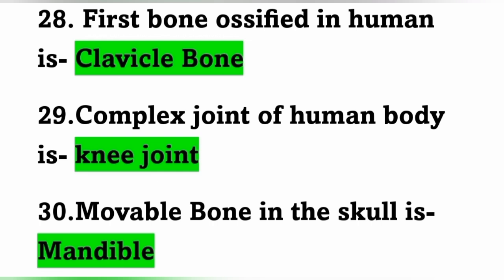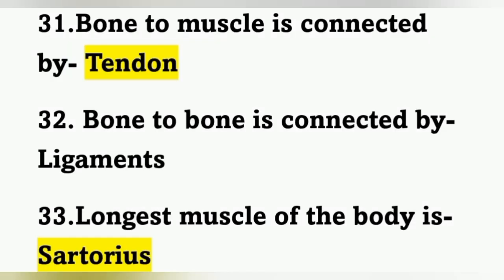The most complex joint of the human body is the knee joint. The movable bone in the skull is the mandible. Bone to muscle connection is by tendon, and bone to bone is connected by ligaments. The longest muscle of the body is the sartorius.